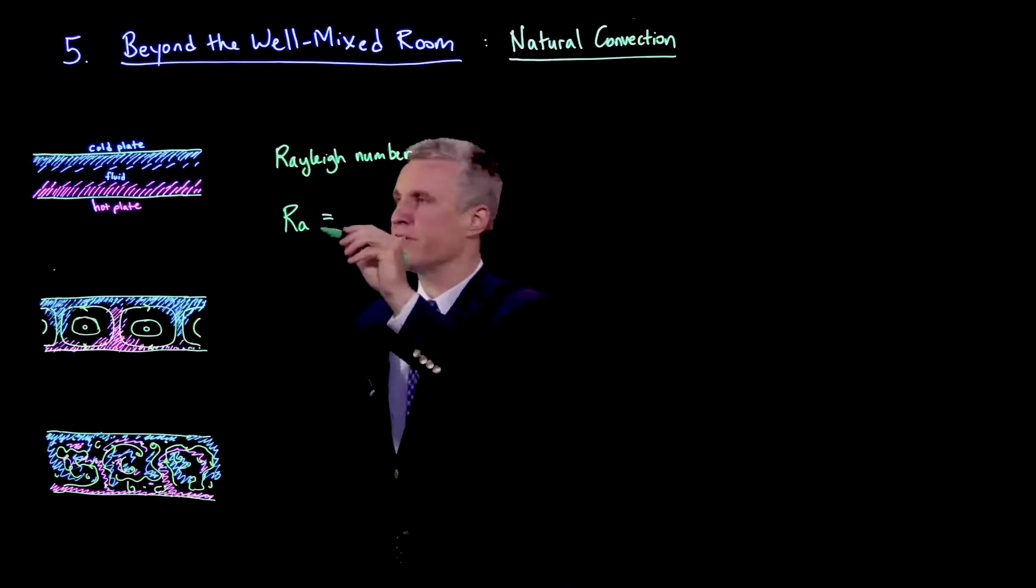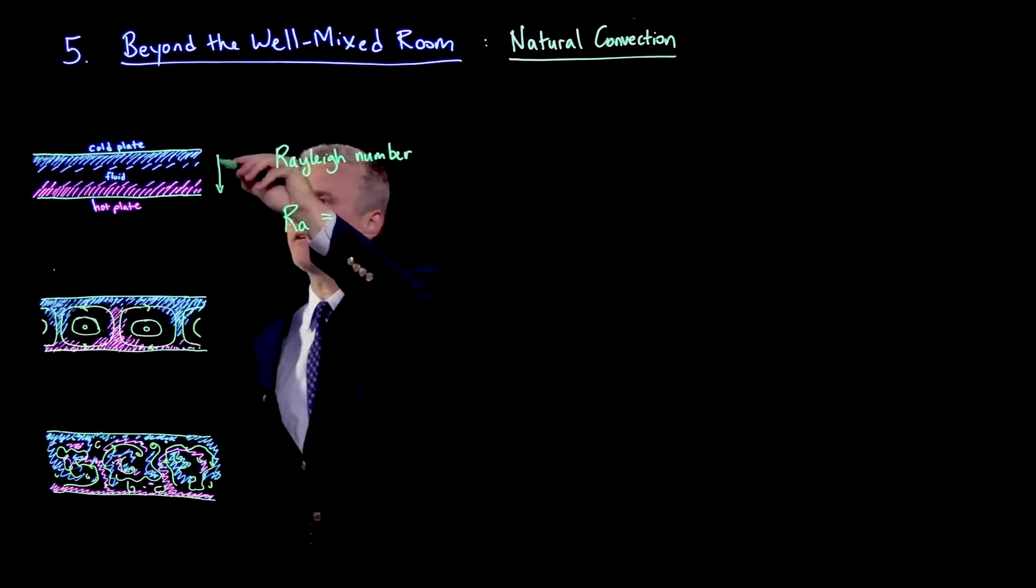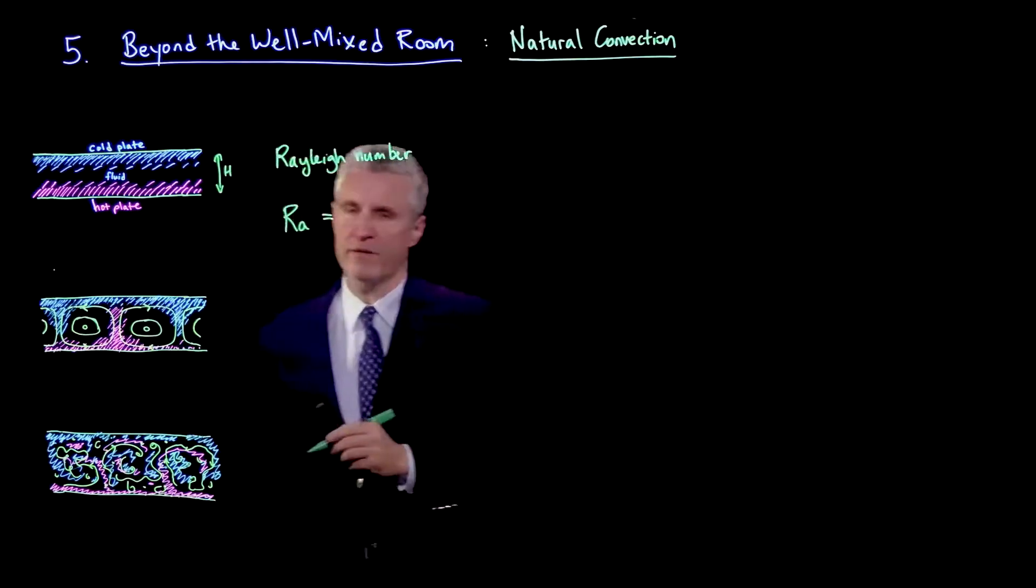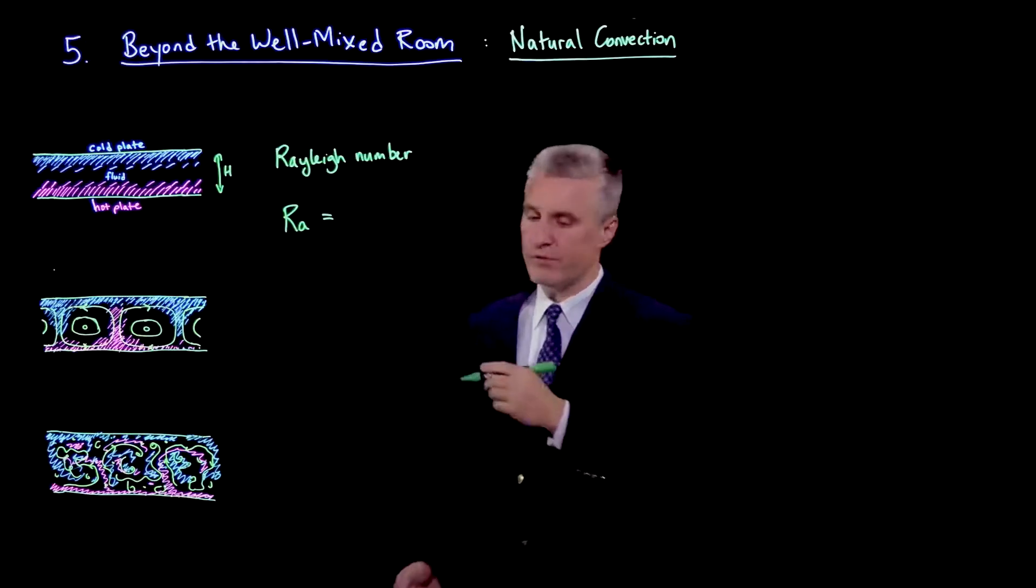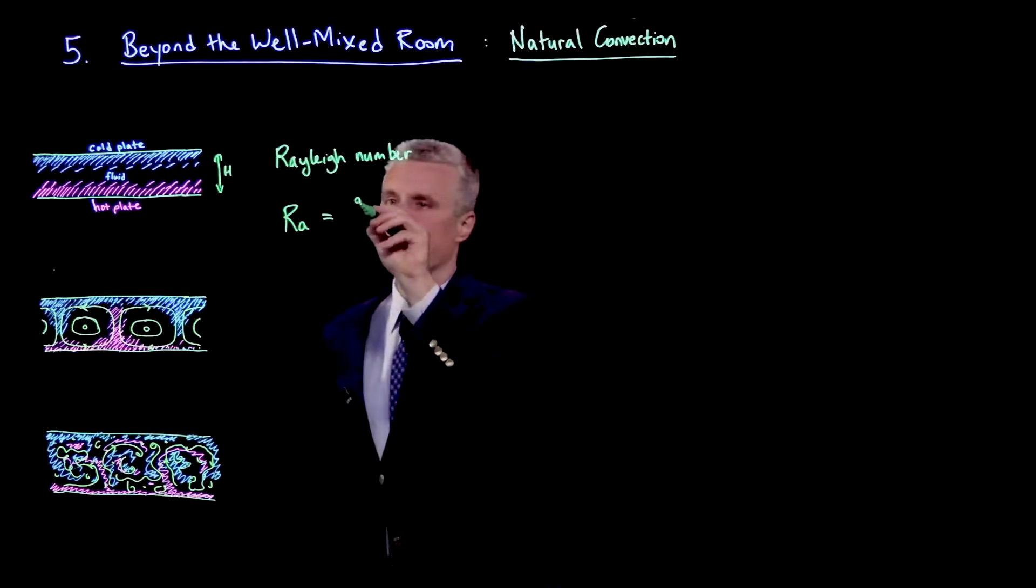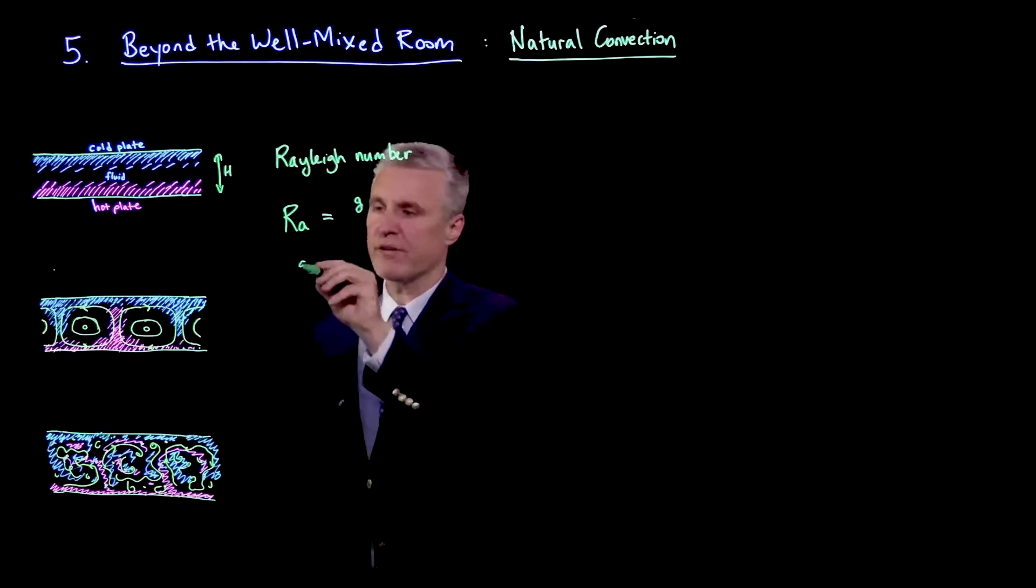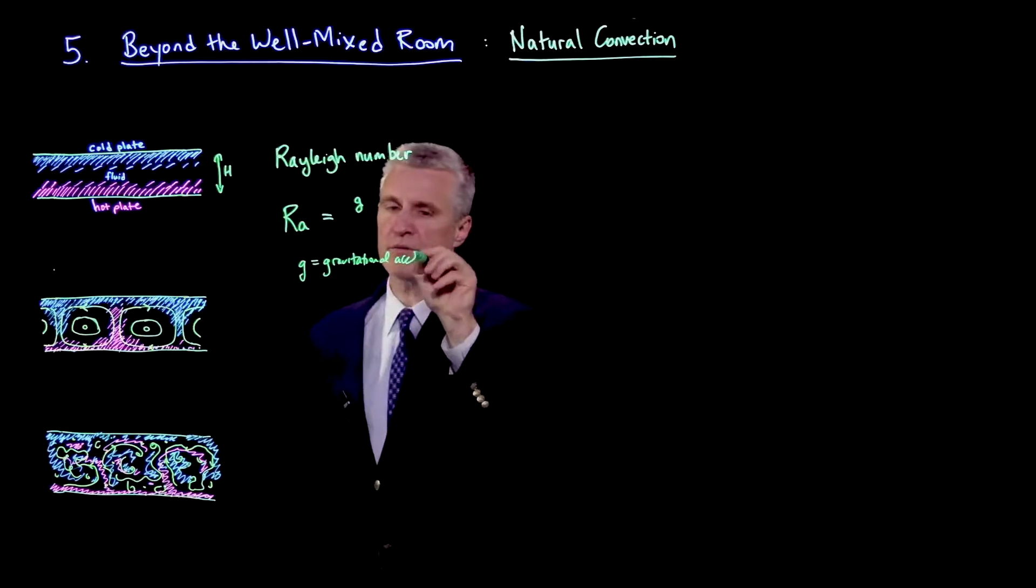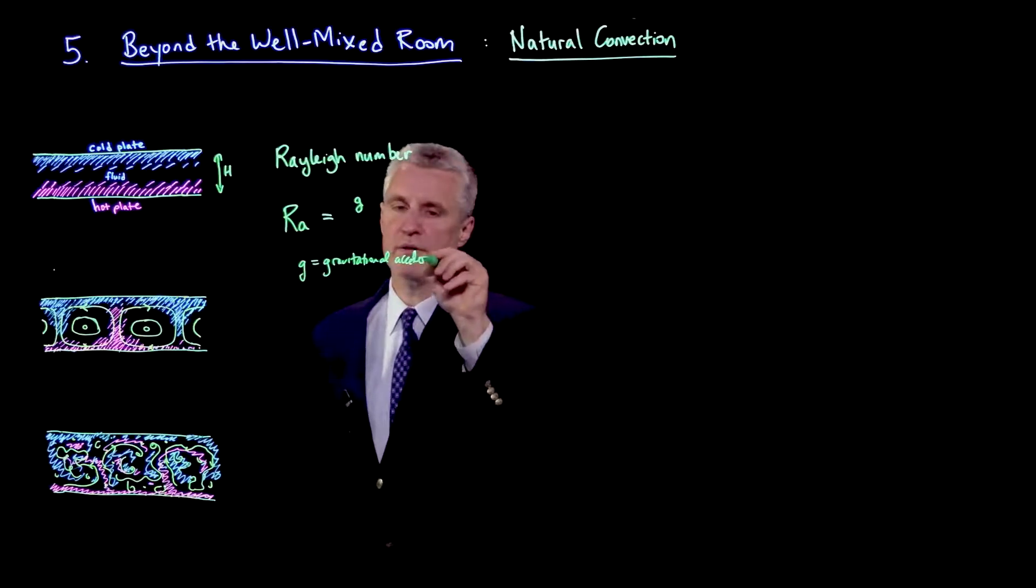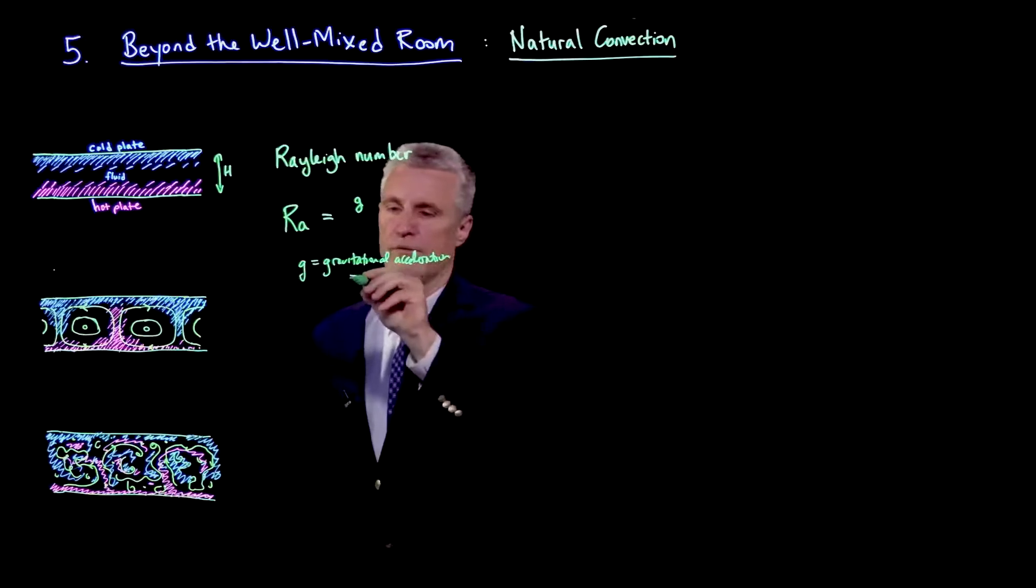In this case, the relevant geometrical scale is the height, because this is a gravitational instability. So we have in the Rayleigh number, we have gravity - gravitational acceleration, which is 9.8 meters per second squared.